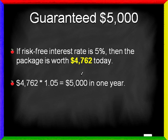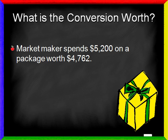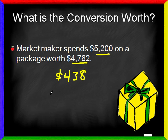In financial terms, we would say the $5,000 future value of that package is worth only $4,762 today. So what is the conversion worth today? We know the market maker has spent $5,200 on a package that is only theoretically worth $4,762. Therefore, he has overpaid by the difference of $438. How will the market maker make up this difference? He will make it up by selling you the call for $4.38. The call is therefore worth $4.38 per contract.